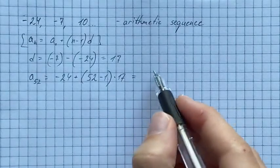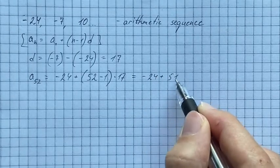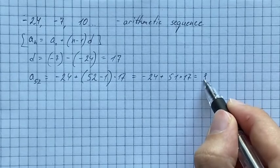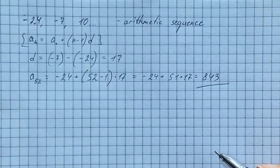Therefore we get negative 24 plus 51 times 17, and therefore we get 843. That's our answer.